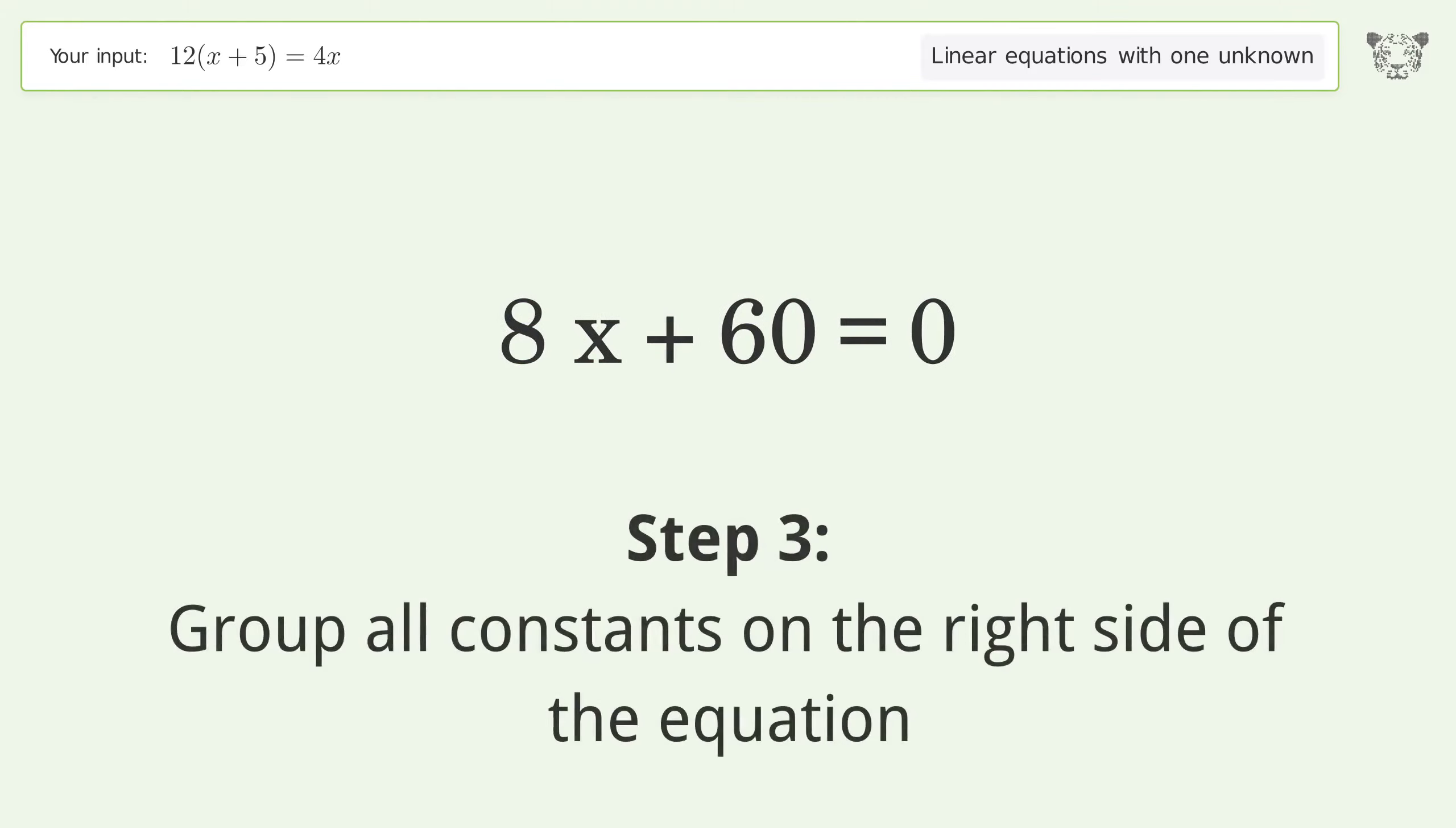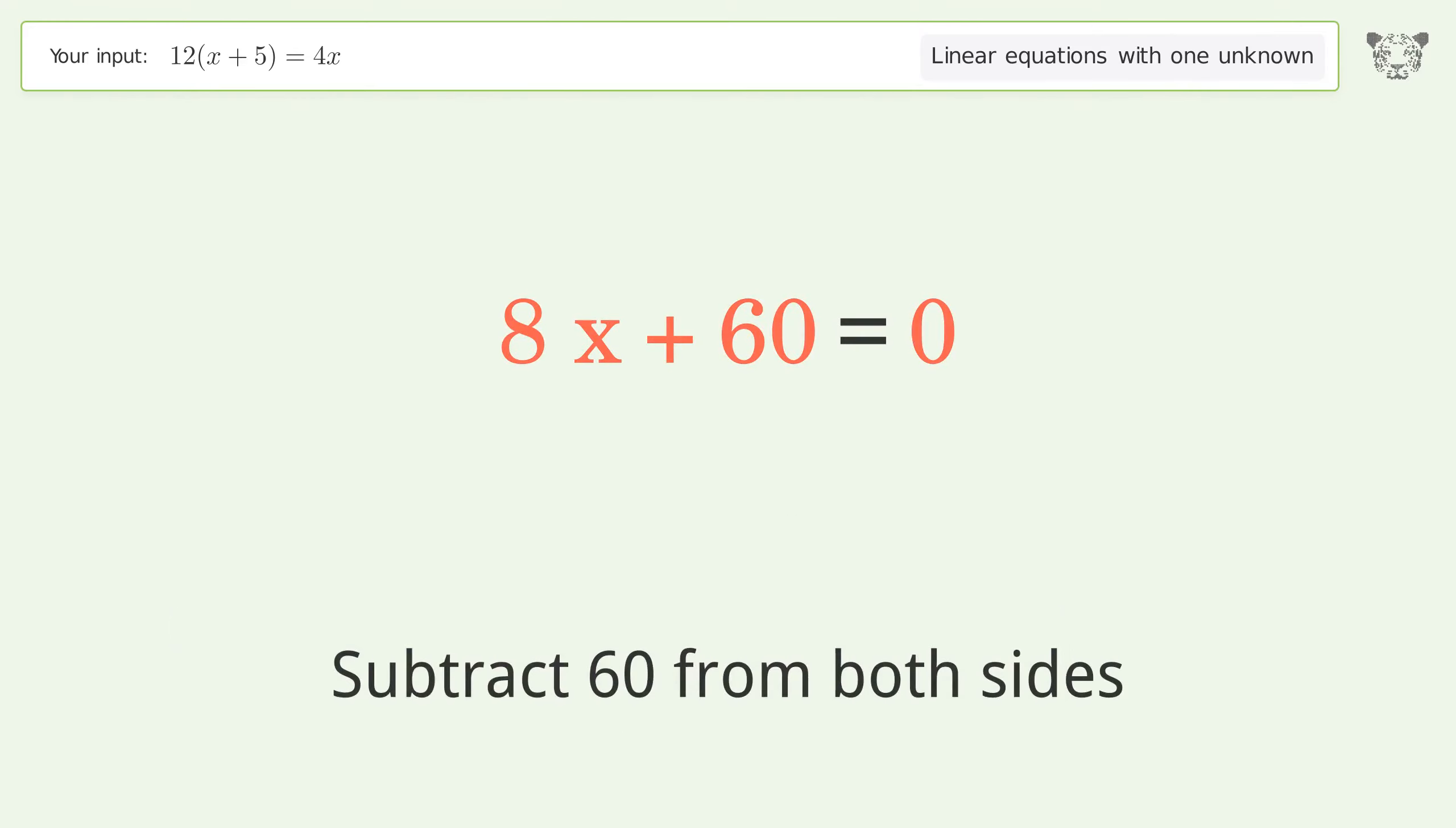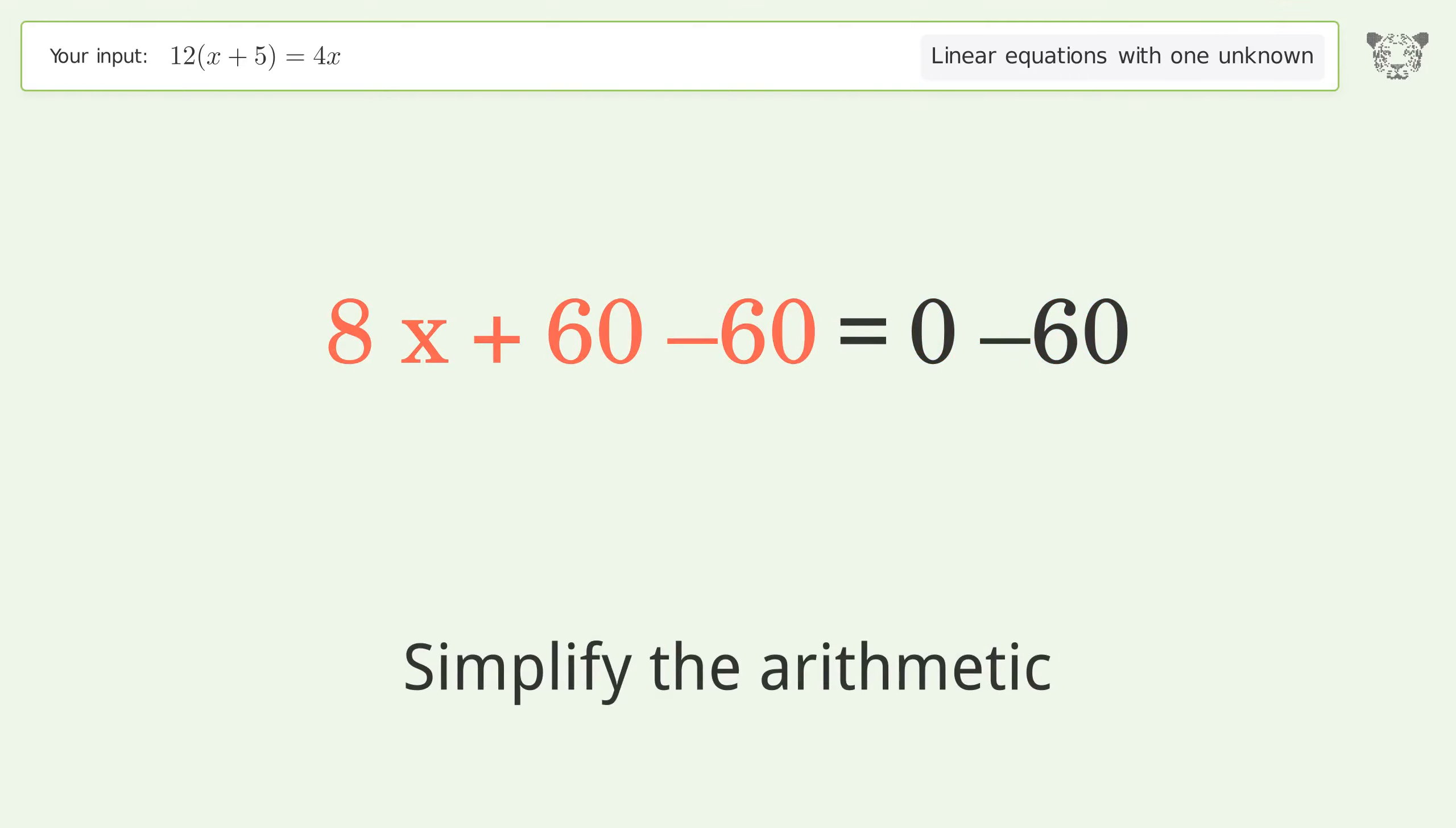Group all constants on the right side of the equation. Subtract 60 from both sides. Simplify the arithmetic.